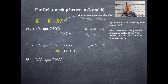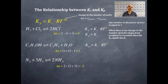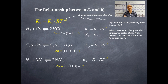Here's another example — a famous equation. Nitrogen gas plus three hydrogen gas molecules produces two ammonia. The ΔN here is moles of products minus reactants: 2 minus (1 + 3) = negative two. So our relationship is: KP = KC × RT to the negative two.